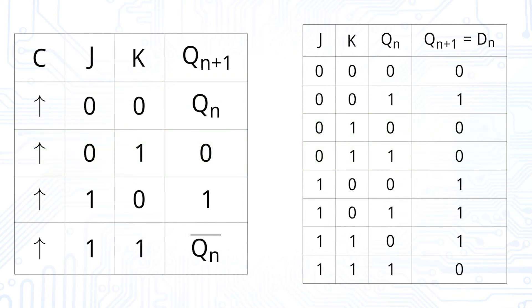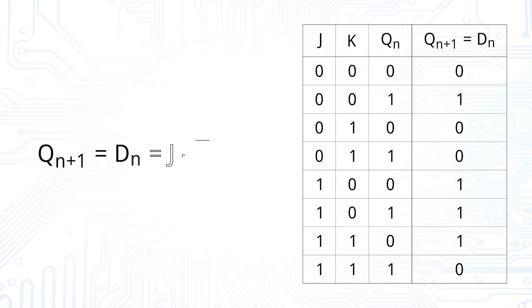We then calculate the output Qn plus 1. This Qn plus 1 is equal to Dn, the input of the D flip-flop. By this we can derive a logic function for Dn.